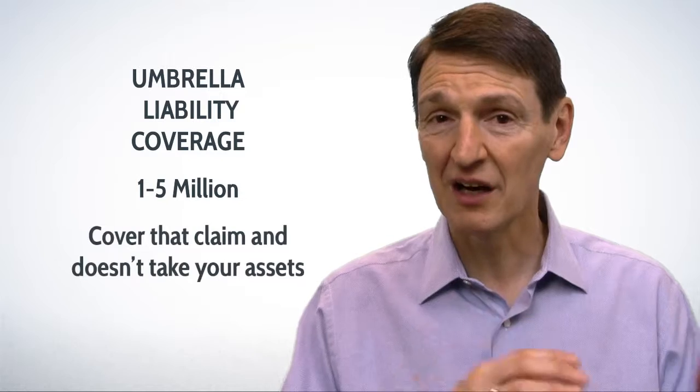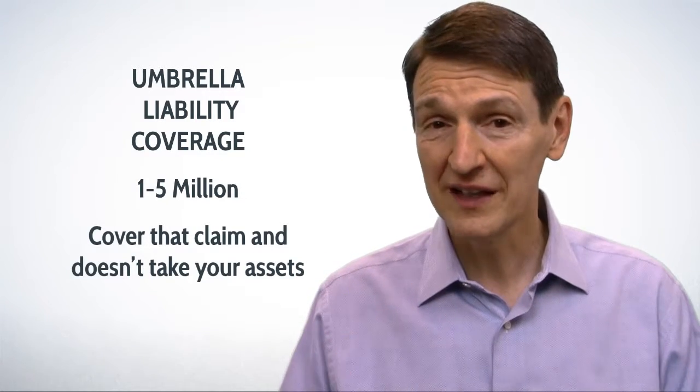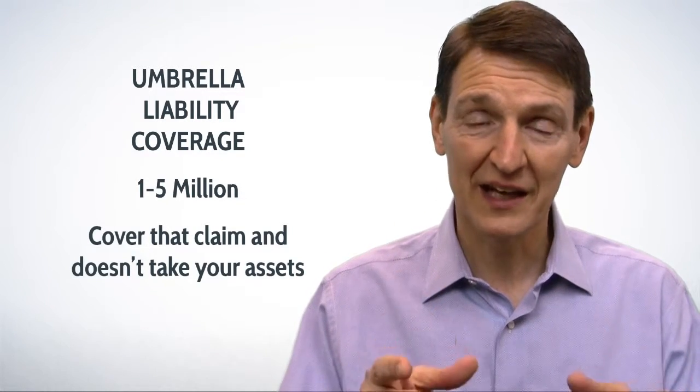Let's walk through those. The first is insurance protection. You have auto, homeowners, maybe boat. If somebody comes after you personally and sues you, you want to have something called umbrella liability coverage. Yeah, probably one, three, five million. So that covers taking care of that claim and not taking assets from you.